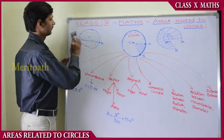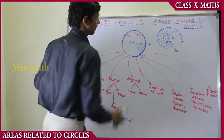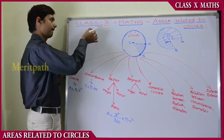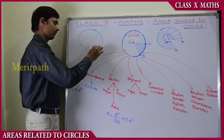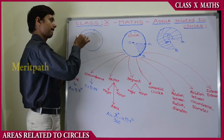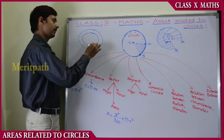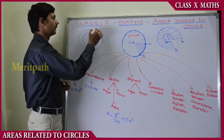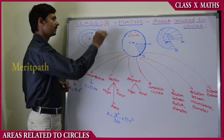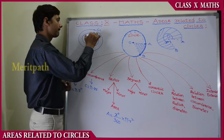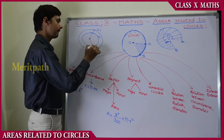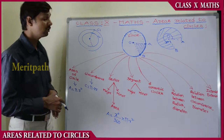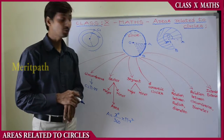Next concept: concentric circles. Concentric circles are two circles — a larger circle C1 and a smaller circle C2 — that share the same center. Any two circles having the same center are called concentric circles.